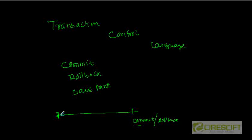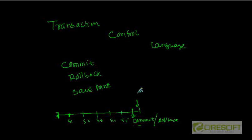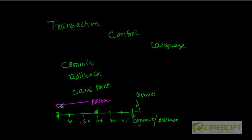If this is the timeline — step one, step two, step three, step four, step five, step six — and then we give a Commit to complete the transaction. If for whatever reason at step three we cannot do steps four, five, and six, then we give a Rollback statement. Rollback will nullify whatever was done in steps one, two, and three, and will go back to whatever the database state was at the time of starting the transaction.